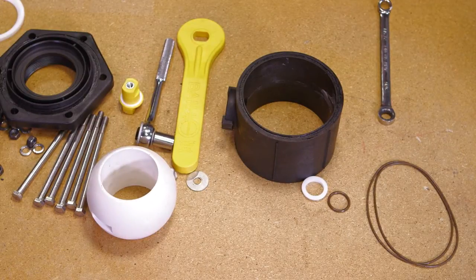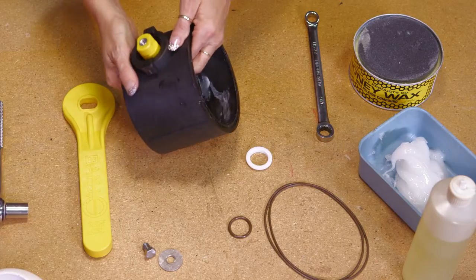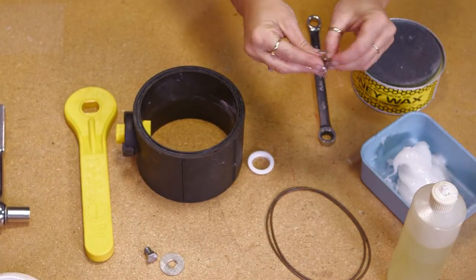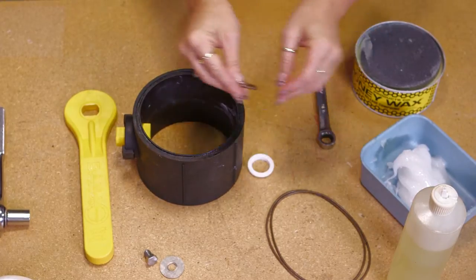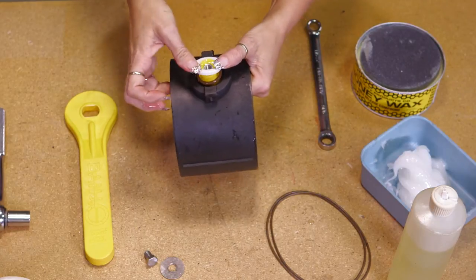Now to assemble the valve. Place the stem and thrust washer back into valve. Replace the stem o-ring after lubricating with vegetable oil. Replace the upper stem bushing.